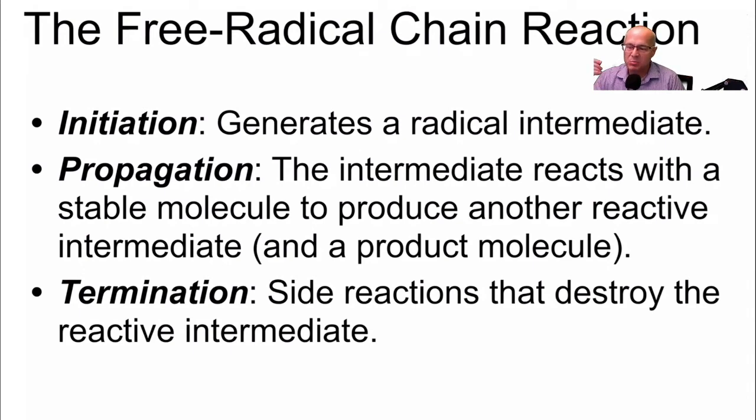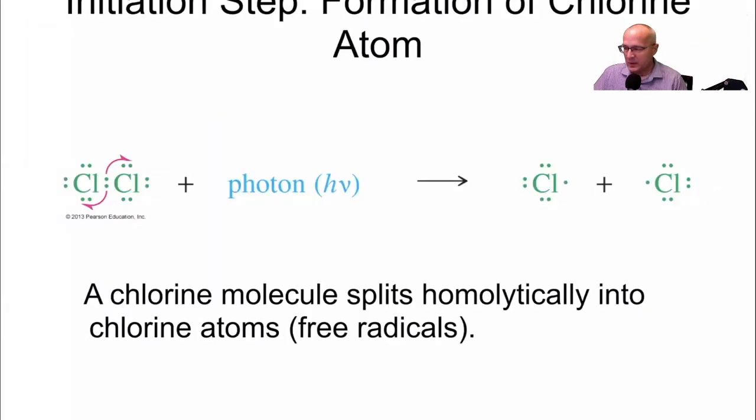Propagation: the radical attacks a non-radical, makes it a radical and a product is formed. And then termination, side reactions that destroy the reactive intermediate, basically undesired side reactions.